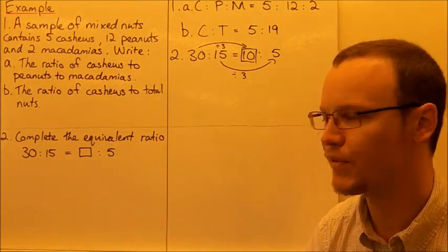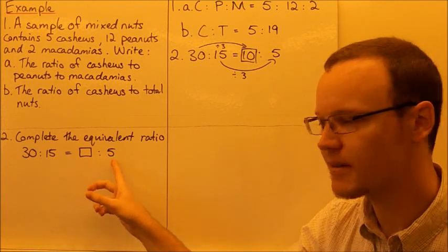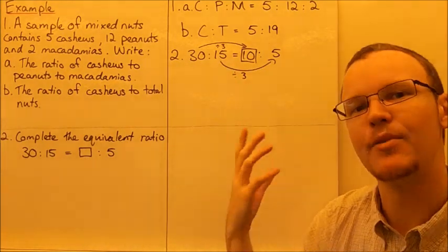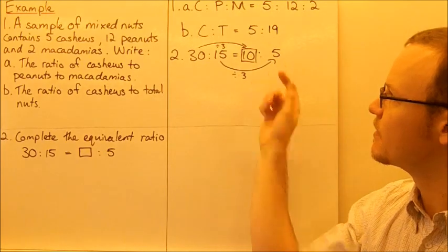For the second question here, complete the equivalent ratio: 30:15 equals something to 5. So to find that missing number, we need to see what we've either multiplied or divided by to go from fifteen to five.